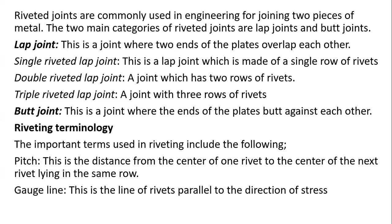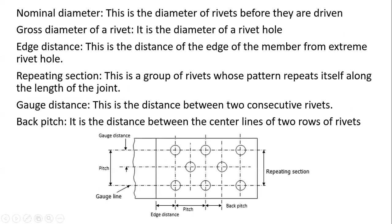We also have what is known as the gauge line — this is a line of rivets parallel to the direction of stress, for scenarios where you know the direction in which stress is acting. The nominal diameter is the diameter of a rivet before it is driven into the hole. We mostly don't use this for calculations; we prefer to use the gross diameter, which is the diameter of the rivet hole, because after punching a rivet into a hole it fills the space completely.